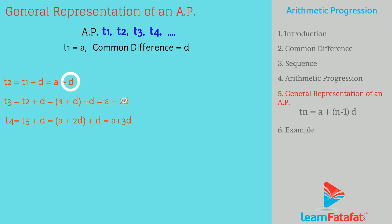Now, if you carefully observe the coefficient of D for all terms, then you will notice that it is 1 less than the term number. That is, T2 is equal to A plus (2 minus 1) into D. T3 is equal to A plus (3 minus 1) into D. T4 is equal to A plus (4 minus 1) into D.